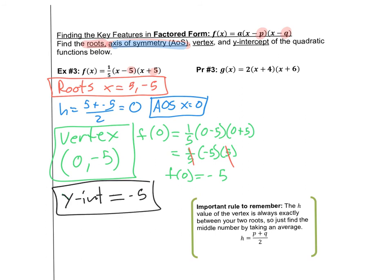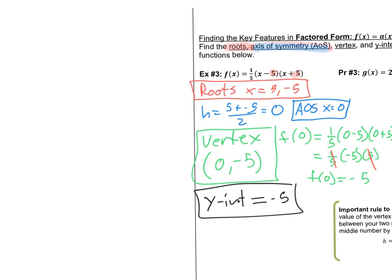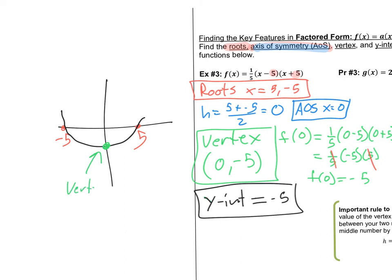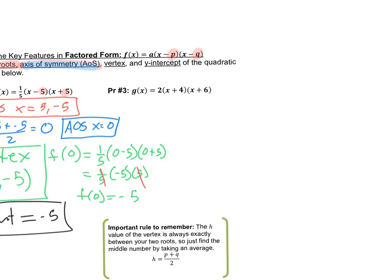Since we also plug in x = 0 to find the y-intercept, the y-intercept is also −5. This makes sense graphically: when roots are exact opposites of each other, like −5 and 5, the vertex falls right on the y-axis, making the vertex and y-intercept the same point. The parabola is perfectly symmetrical about the y-axis.